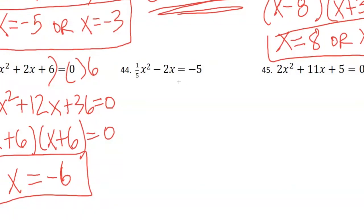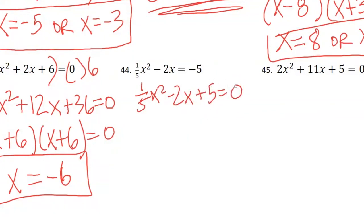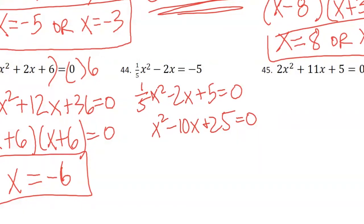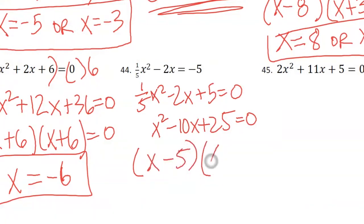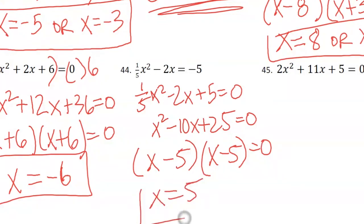Number 44 — let's set this equal to 0 first, then take care of the fraction. We've got 1/5 x squared minus 2x plus 5 equals 0. Multiply everything by 5: x squared minus 10x plus 25 equals 0. Two numbers that multiply to 25 and add to negative 10: negative 5 and negative 5. Solving both, x equals 5 — and since it's a repeated solution, we don't need to write it twice.